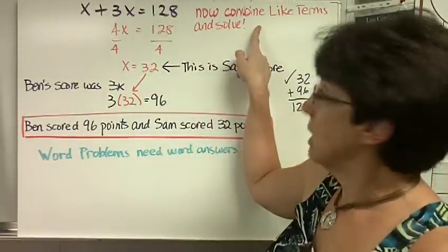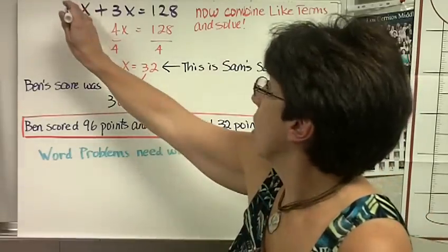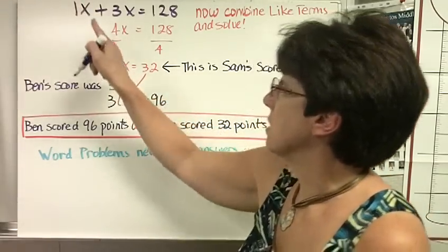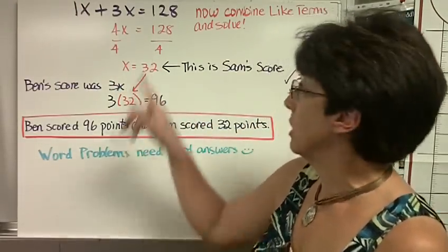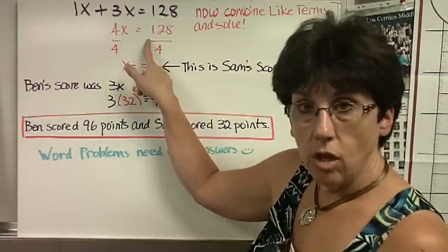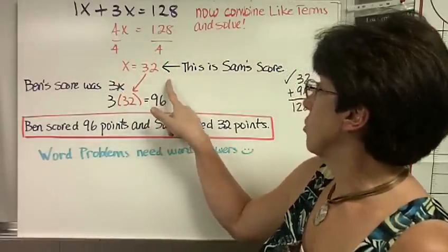Now, we combine like terms and solve. x plus 3x, remember this is really a 1x. So, 1 plus 3, adding the coefficients, we get 4x equals 128. To solve, we divide both sides by 4. So, x equals 32.